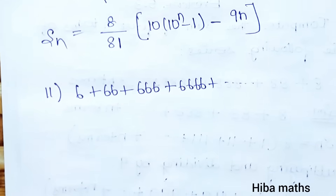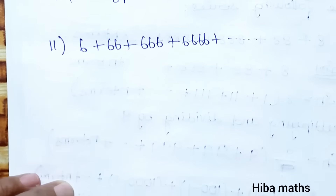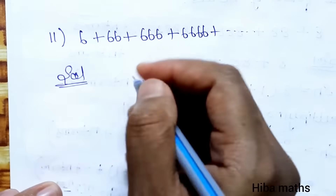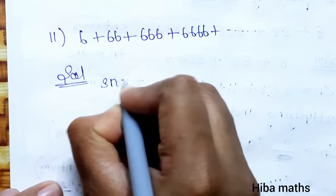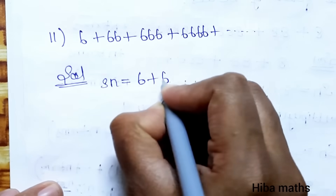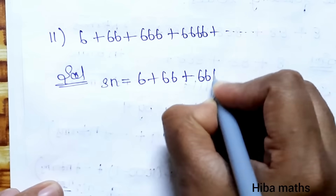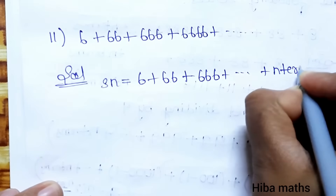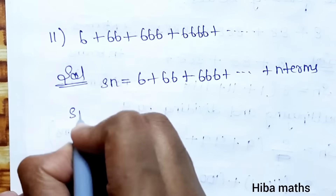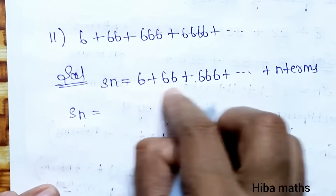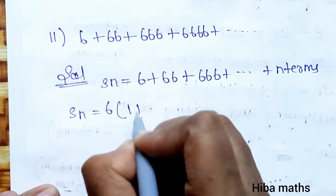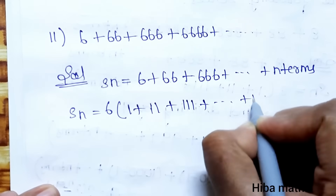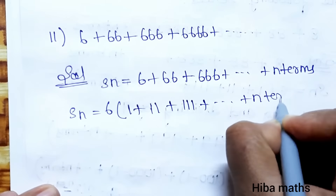Second question: 6 + 66 + 666 + ... up to n terms. S(n) — we take 6 as common: 6 times (1 + 11 + 111 + ... up to n terms).